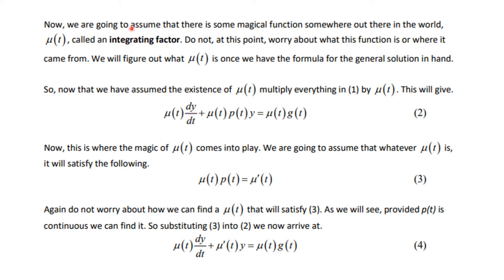Okay, now we're going to assume there's some magic function, and m is the way magic begins, and so we're going to use the Greek m, mu, and we're going to change the independent variable from x to t just because that's what these notes do, and this is going to be an integrating factor. So it's going to make this all work. It's going to be a magic function.